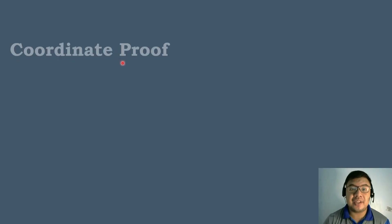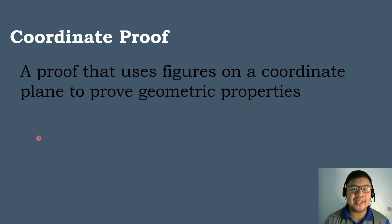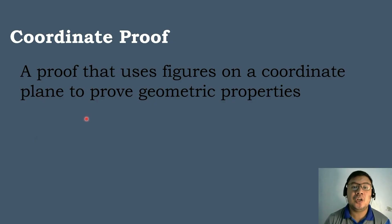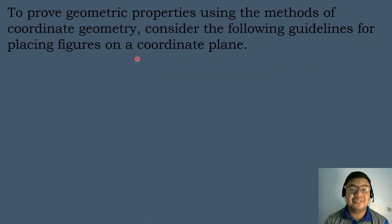Let us define first what is a coordinate proof. When we say coordinate proof, it is a proof that uses figures on a coordinate plane to prove geometric properties.